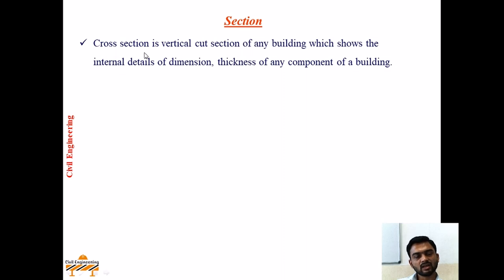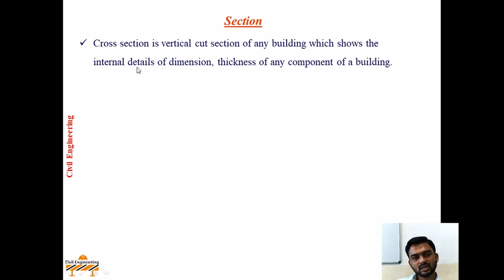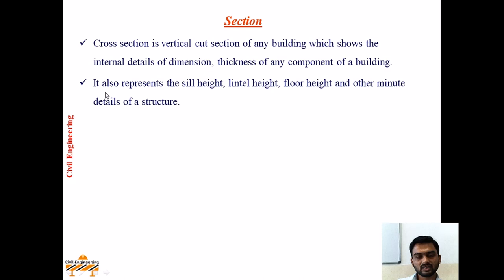Now, section. Cross section is a vertical cut section of any building which shows the internal details of dimensions and thickness of any component of the building. Section is most important for a building so that all internal details are revealed - that may be various wall thicknesses, sill level, lintel level, height of the doors, thickness of the lintels, chajja projection, chajja lintel thickness, etc. It also represents the sill height, lintel height, floor height, and other minute details of the structure.